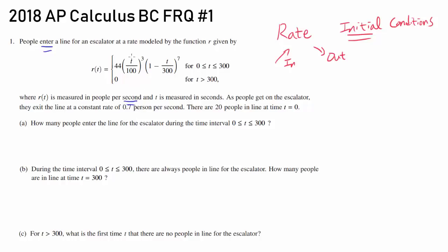So from 0 to 300 seconds, people are entering the escalator at this rate. And after 300 seconds, no one is entering the escalator. So maybe they blocked it off. And we know R(t) is measured in people per second and t is measured in seconds. As people are getting on the escalator, they are exiting. So this is the rate going out. They are exiting the line at a constant rate of 0.7 person per second. And initial conditions: there are 20 people at time of zero. So let's begin.